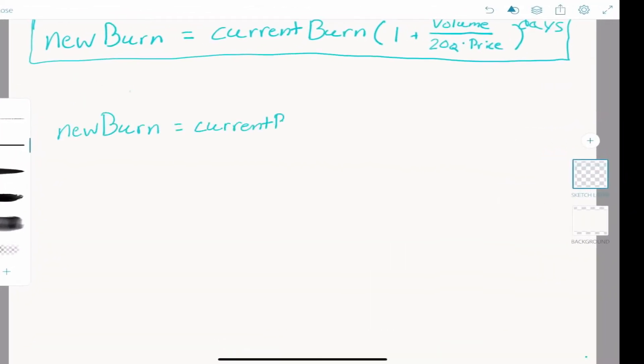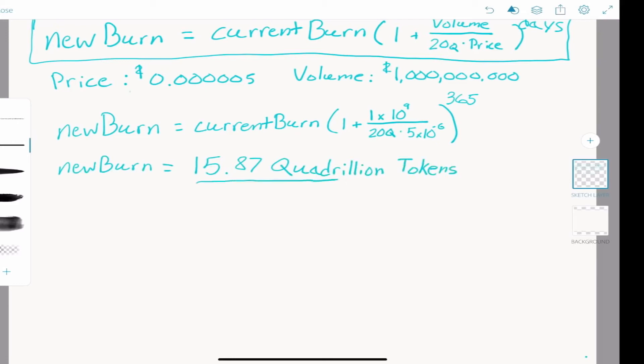This is important. Let's say the price stays where it is now, around 0.0000005, and we see volumes close to $1 billion per day once all the catalysts come to pass. Our compounding interest equation tells us the burn wallet will have burnt 15.87 quadrillion tokens.